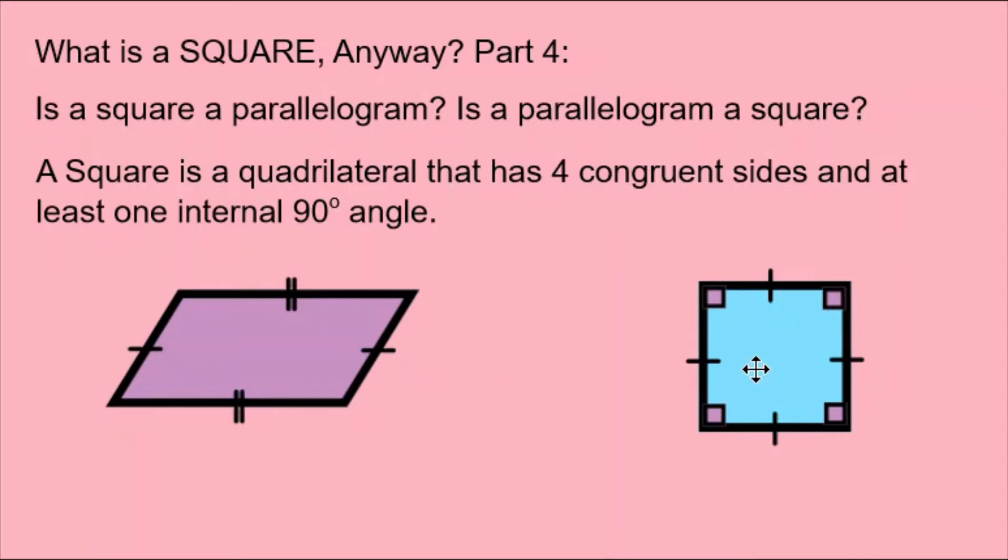So this light blue square on the right follows those rules. These little lines show that the four sides are equal. And these little squares in the corners show that the internal angles are 90 degrees. The square has four congruent sides and at least one internal 90 degree angle.